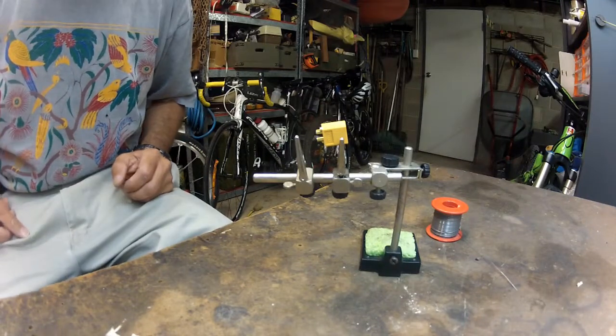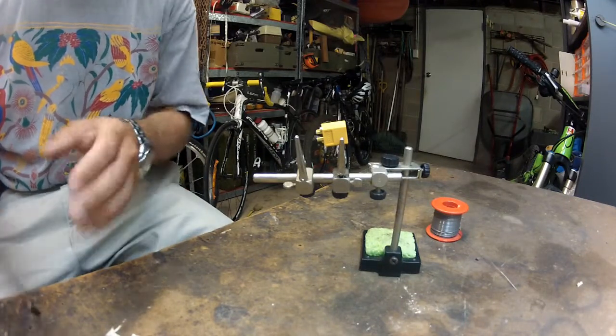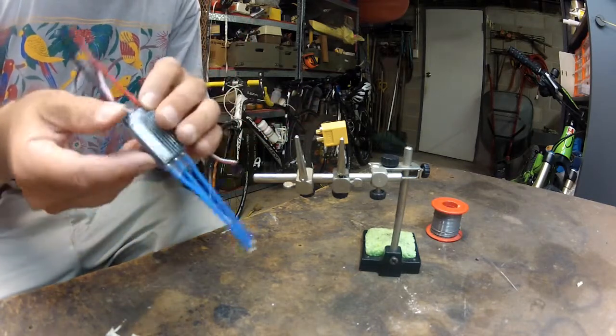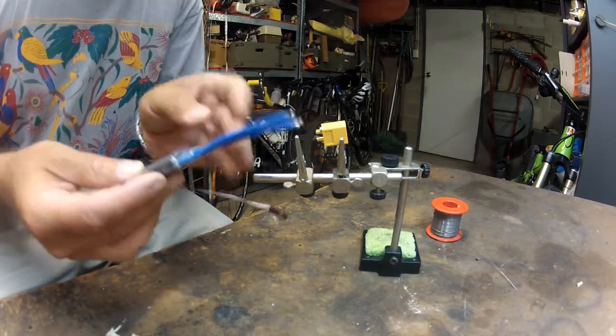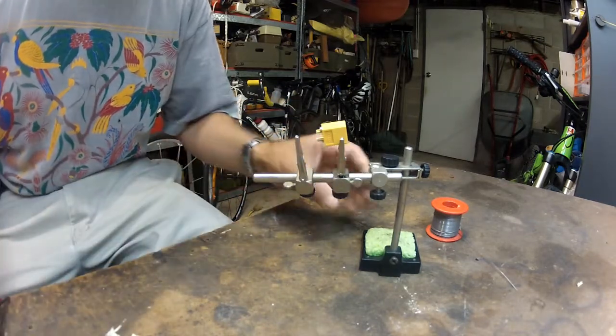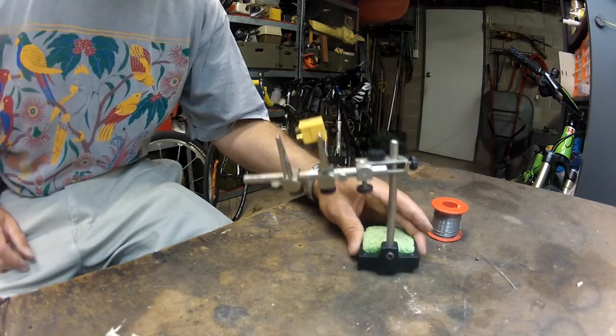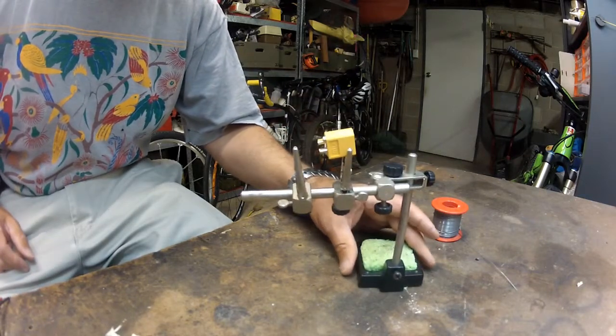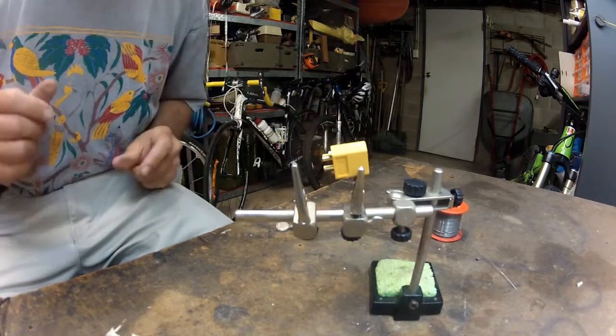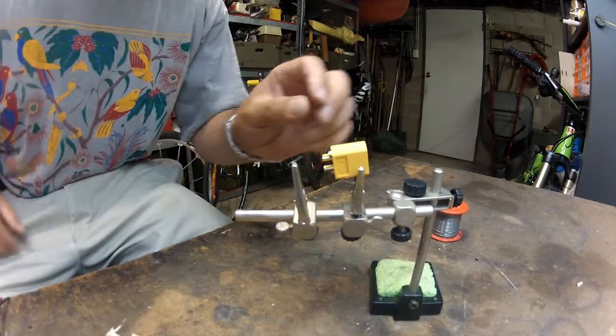Today we're going to solder on the plugs for an ESC. That's a pretty common job to do and there's a few tricks to it. First trick is to get yourself one of these - it's a little soldering extra hand helper and they just make life a whole lot easier when you're doing this job. So I'm going to put an XT60 connector on the battery leads.